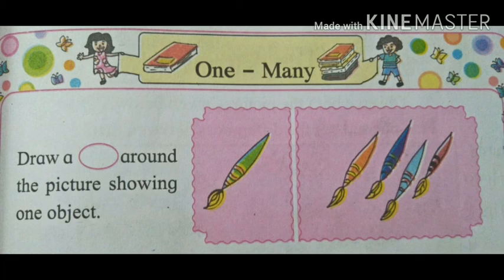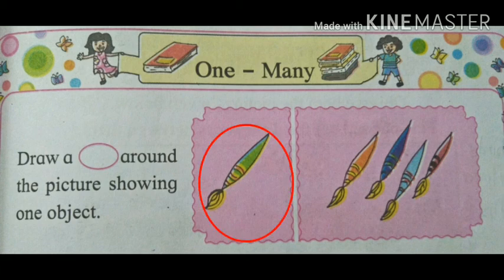Now students, here is a question: draw a circle around the picture showing one object. Take a pencil and circle the one object. In the first picture, there is only one brush. Let's circle the one brush. Take a pencil and circle the one brush. Have you done? Very good, students.